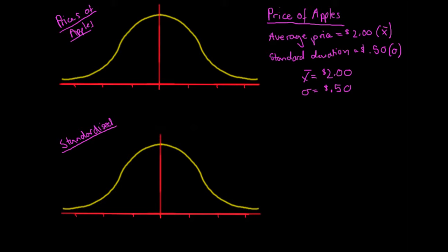So if we want to represent this on a graph, I'll go to the top left graph. For our normal distribution, the line in the centre represents the mean. For my unstandardized graph I'm graphing the price of apples, and the mean price was $2, so I'll put $2 under the red line here. That was my average price, my x-bar.